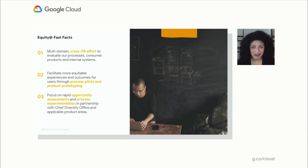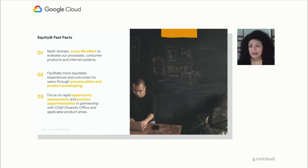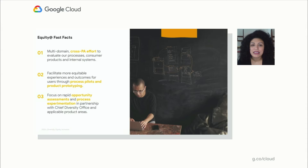So equity engineering — some fast facts about us. Equity Engineering is a multi-domain, cross-product area effort that evaluates processes, consumer products, and internal systems. We facilitate more equitable experiences and outcomes for users through process experimentation, in partnership with the chief diversity office and all applicable product areas.